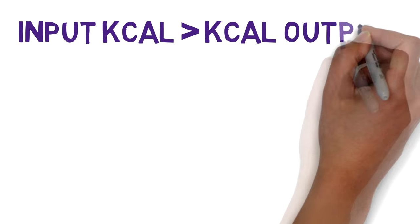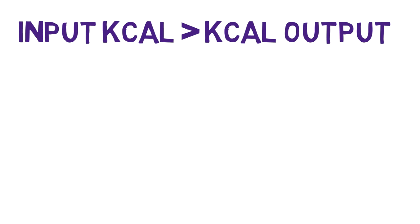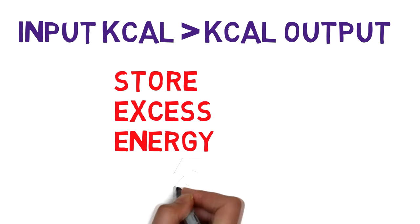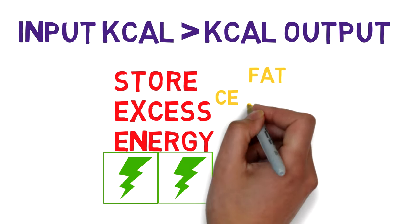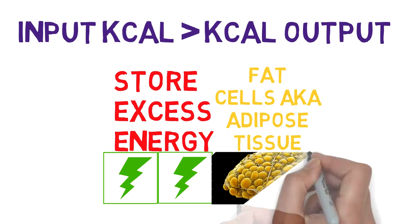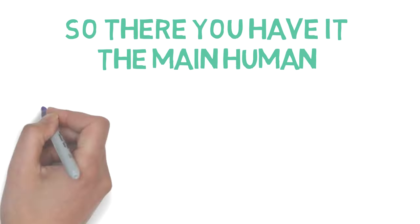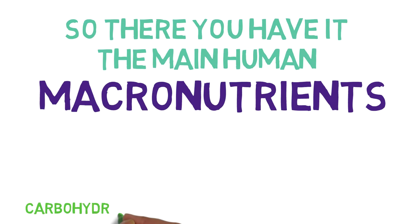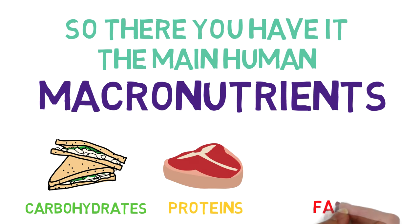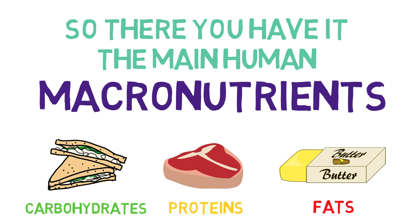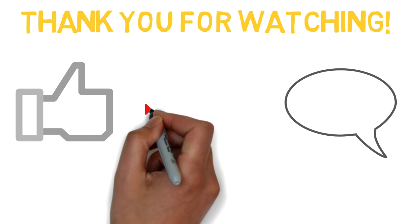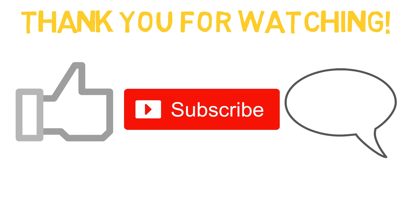When you consume more calories than you need, your body will store the excess energy in your fat cells, also known as your adipose tissue. So there you have it — the main human macronutrients: carbohydrates, protein and fats. Thanks very much for watching. Please don't forget to like, comment, share and subscribe. I've been Adam at Adam Explains and I'll see you guys again next time.